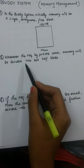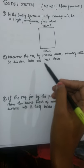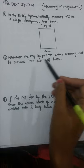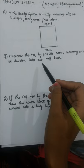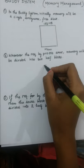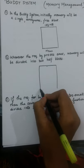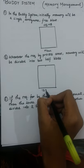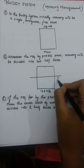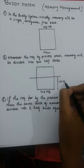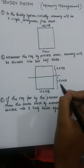The second point states that whenever a request by a process arises, memory will be divided into two half blocks. So suppose a request by the process arises — this memory of 128 MB is subdivided into two equal halves, that is 64 MB and 64 MB.